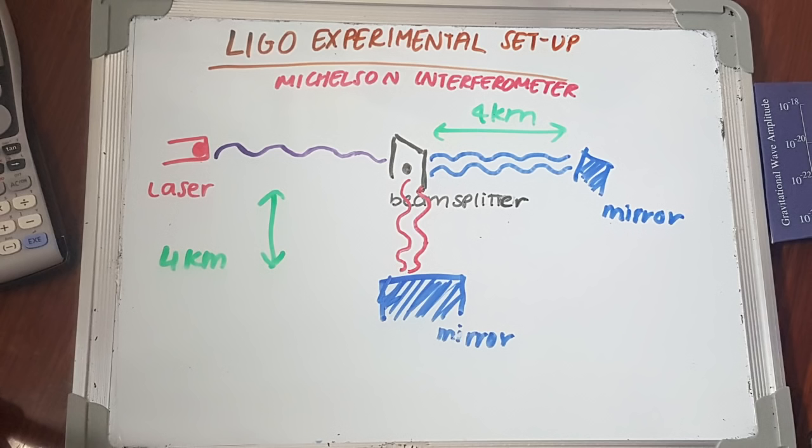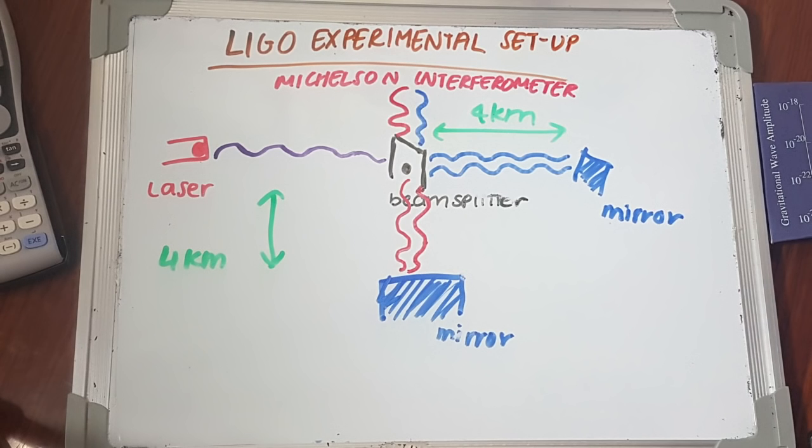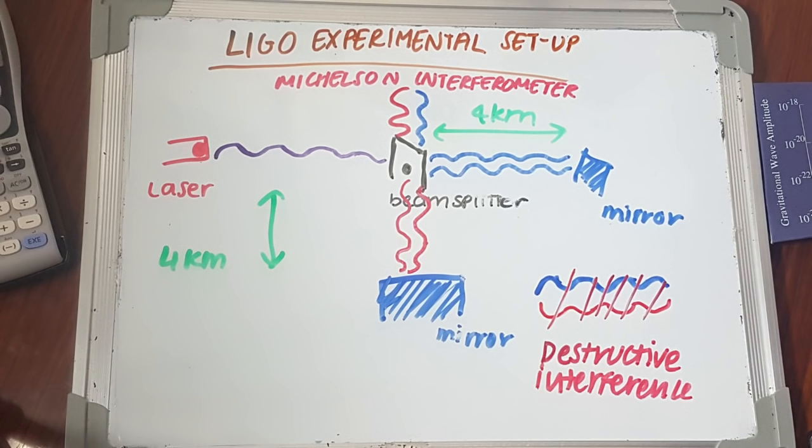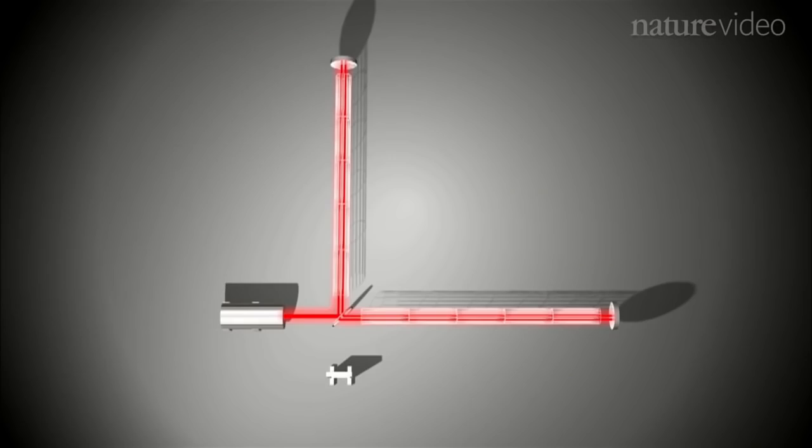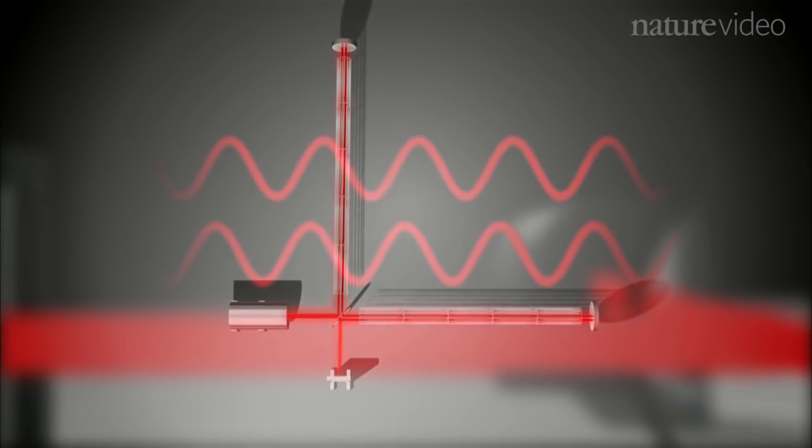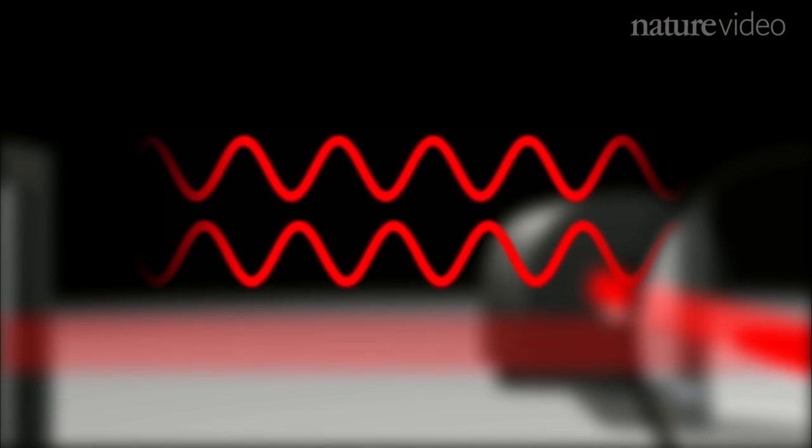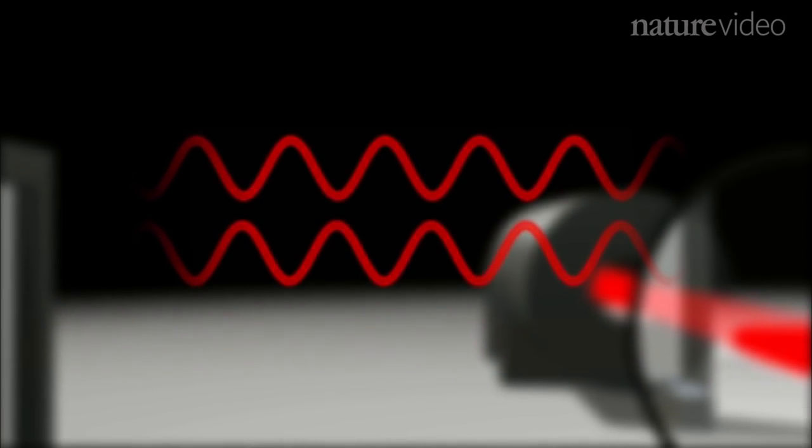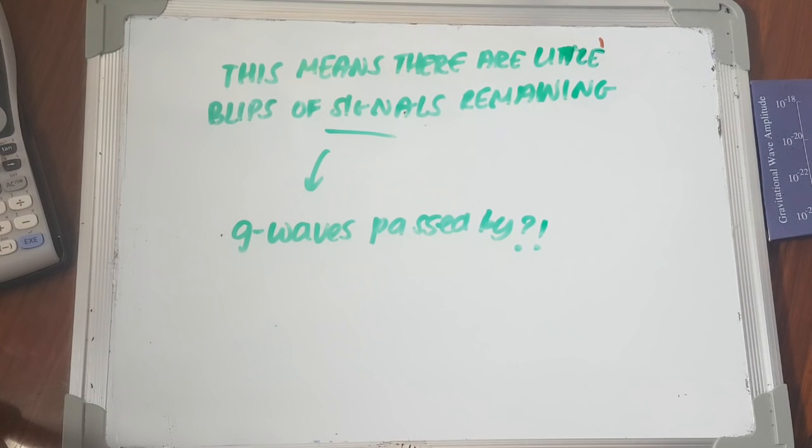Now if the length of the paths that the beams were sent down are just right, we can make the valleys of one line up with the peaks of the other. Due to destructive interference, the waves will cancel out completely and no signal or interference pattern will be seen. But if a gravitational wave were to pass by, it would shrink one of the paths and lengthen the other, meaning that the converging beam wouldn't cancel out completely and we would end up getting little blips of signal.